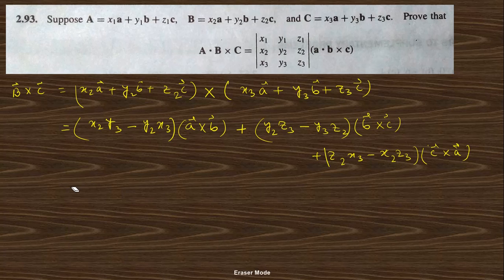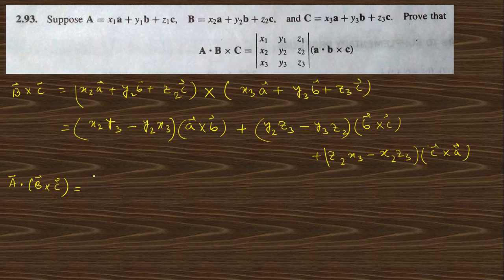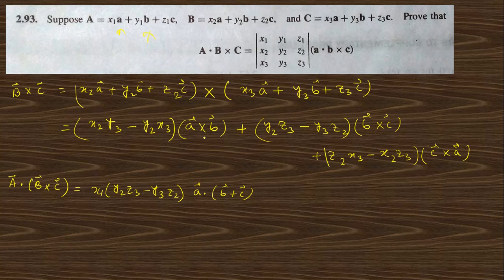Now taking a dot (b cross c): since a dot a equals a squared but here in the box product if two parameters are the same it is zero — as shown in the previous lecture. So the a vector dotted with this expression gives x1·(y2·z3 − y3·z2) times a dot (b cross c). For b: the zero terms drop out, leaving y2·(z2·x3 − x2·z3) times b dot (c cross a).